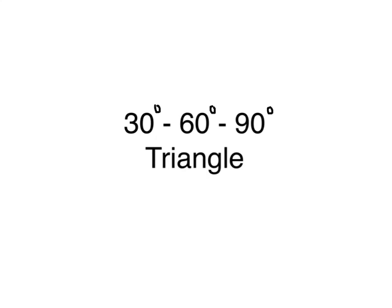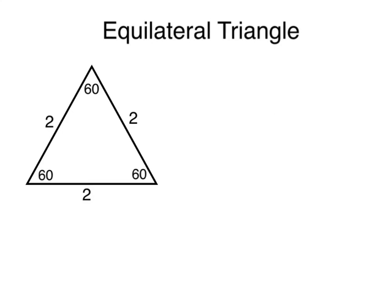There's a special type of right triangle that is often used in geometry, the 30-60-90 triangle. The 30-60-90 triangle was derived from an equilateral triangle.